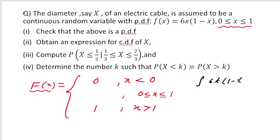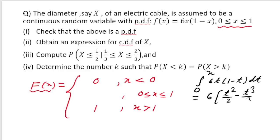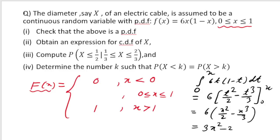For 0 ≤ x ≤ 1, to find F(x) we integrate f(t) = 6t(1 − t) from 0 to x. The integral gives 6·[t²/2 − t³/3] from 0 to x = 6·(x²/2 − x³/3) = 3x² − 2x³. We can verify: F(1) = 3(1) − 2(1) = 1, confirming total probability is 1. So the CDF is: F(x) = 0 for x < 0, F(x) = 3x² − 2x³ for 0 ≤ x ≤ 1, and F(x) = 1 for x > 1.